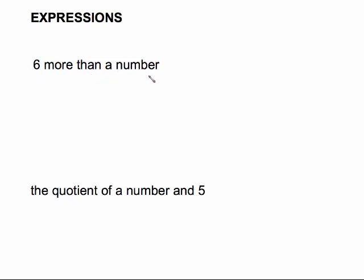Let's look at a couple of examples. 'Six more than a number' — 'a number' means some letter, you can use whatever letter you want. Starting from the left: six stays as six, 'more than' tells us to use a plus sign, and then the number x. Six plus x is the same as x plus six — the order doesn't matter because there's a plus sign in between.